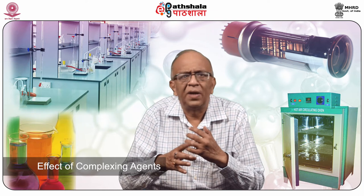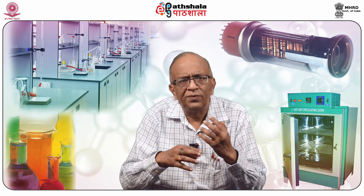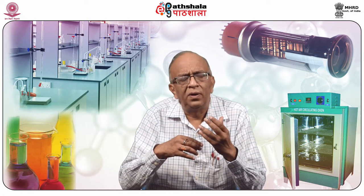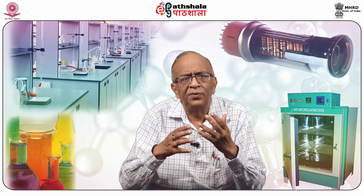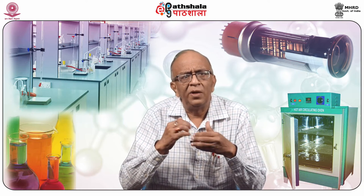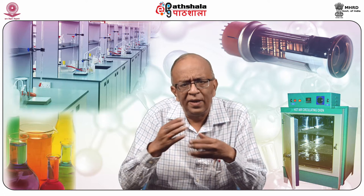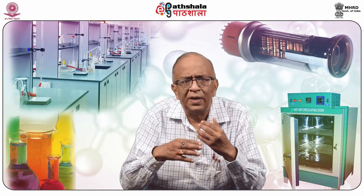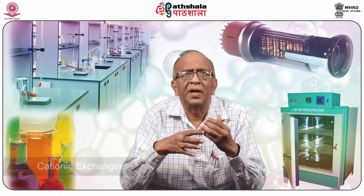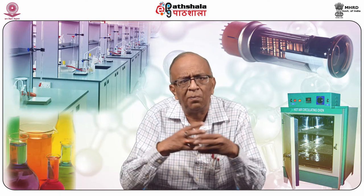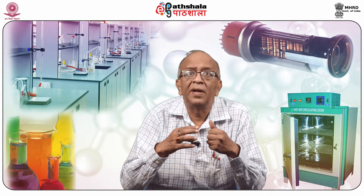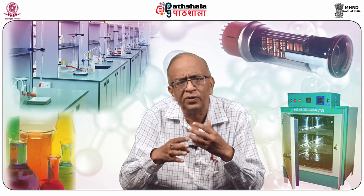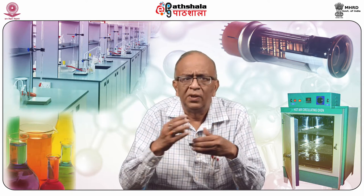Regarding the effect of complexing agents: ligands which are neutral molecules have no effect on the charge of anions but they change the exchange equilibrium constant. Many metal ions are complexed by anions, yielding negatively charged complex ions. Thus, the rare earth metal cations, which are poorly separated by cation exchangers, can be complexed and separated quite well by anion exchangers. Most of the useful complexing agents are themselves weak acids, weak bases, or anions or cations thereof.